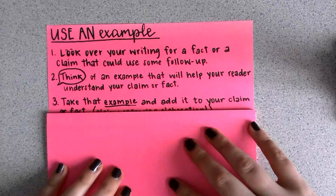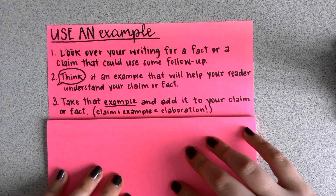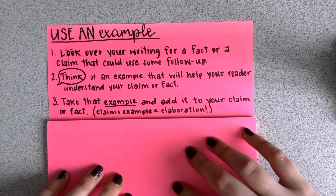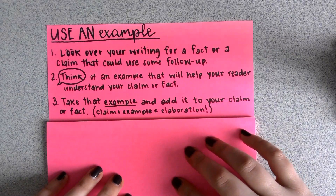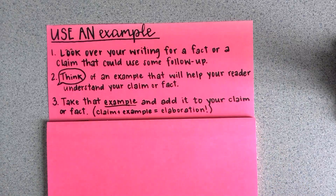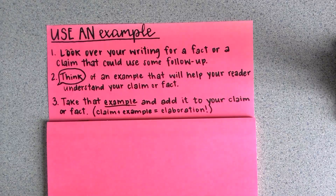After you think of your example, you're going to take that example and add it to your claim or fact. This step is exactly the same as last week's strategy, so it should seem familiar to you. Think of this strategy almost like a math equation: claim plus example will equal quality elaboration and will improve your writing that much more.